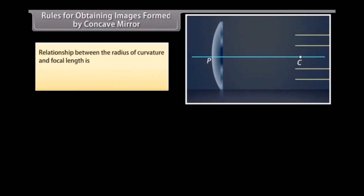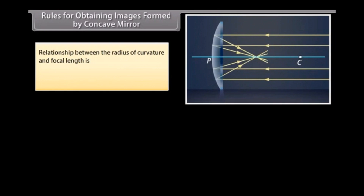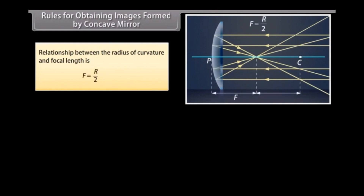Rules for obtaining images formed by concave mirrors. The relationship between the radius of curvature and focal length is: f is equal to R upon 2.